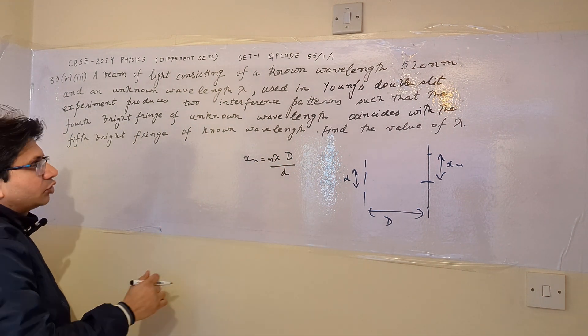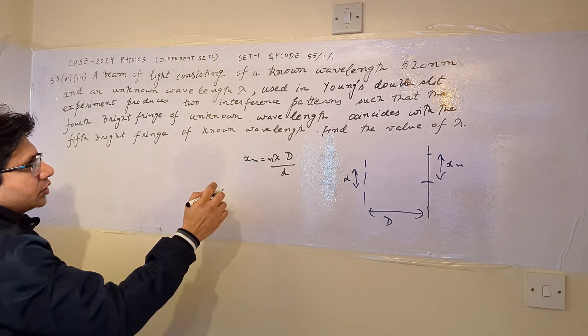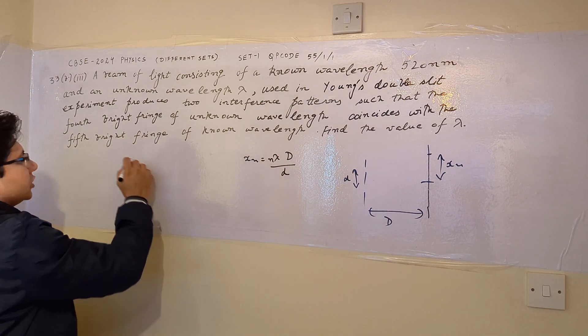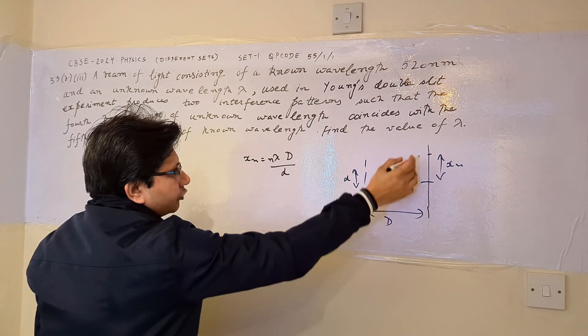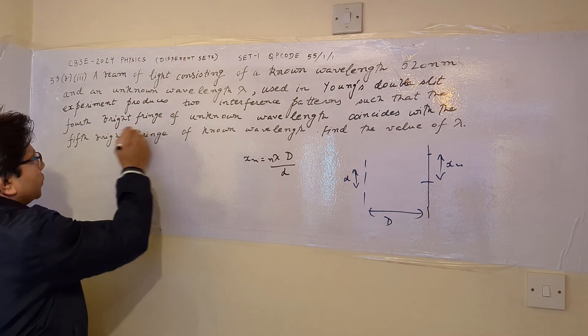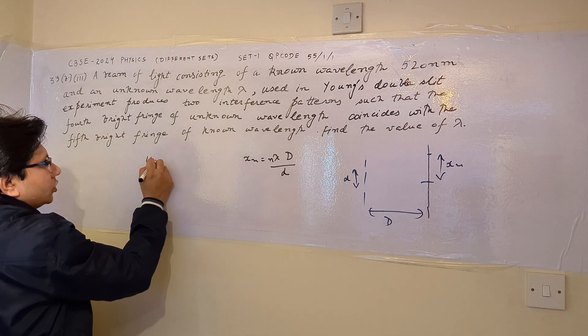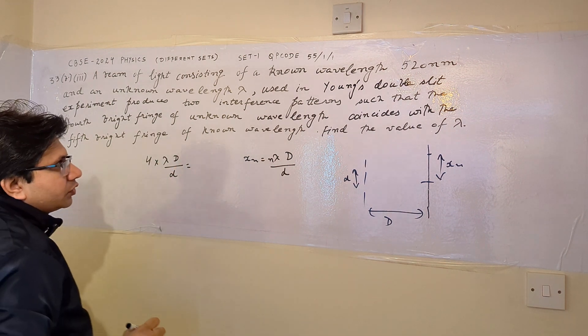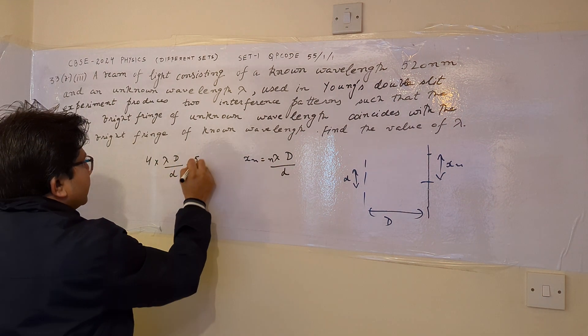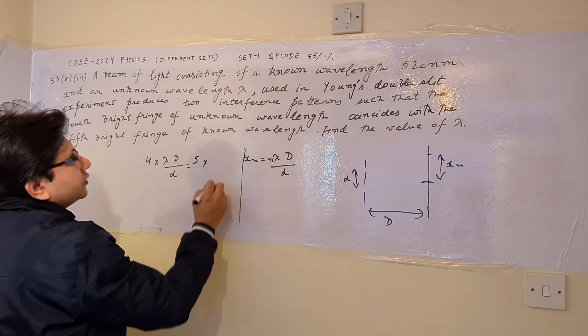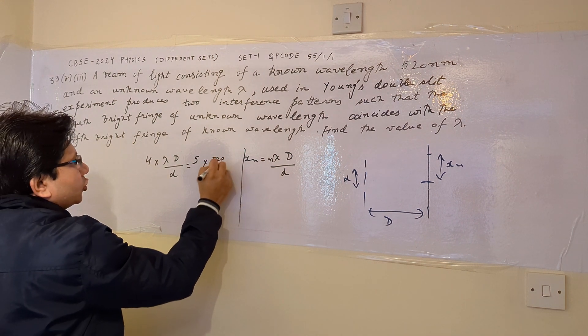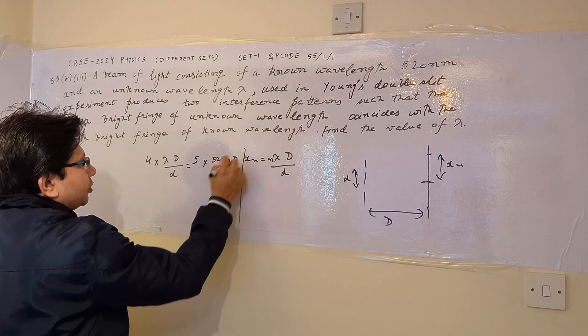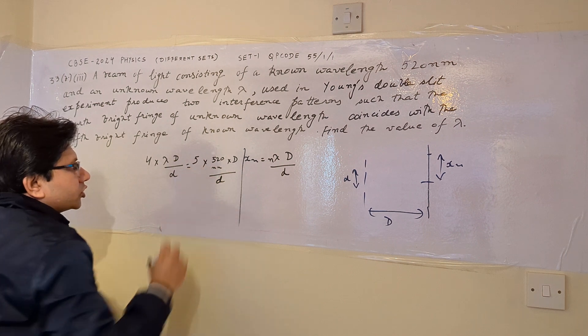So we have to use this particular formula. For the unknown wavelength, the bright fringe is the fourth one. So we can say that 4 multiplied by lambda into capital D upon small d should be equal to 5 multiplied by 520 nanometer multiplied by capital D upon small d.